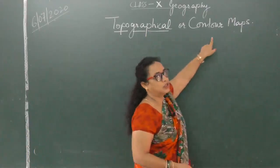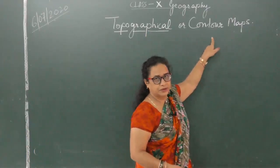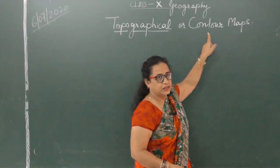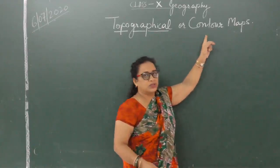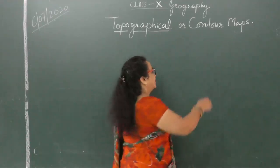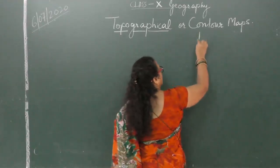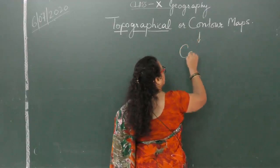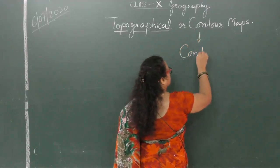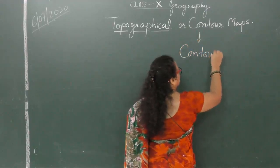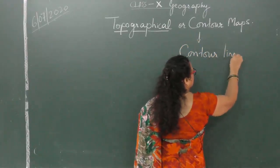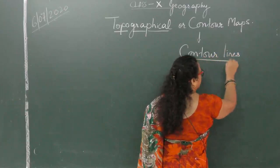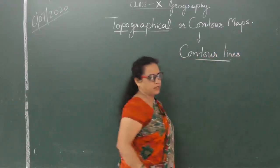Topographical maps are also called contour maps. The reason is we use contour lines. They are called contour maps because of contour lines which are used on these maps.